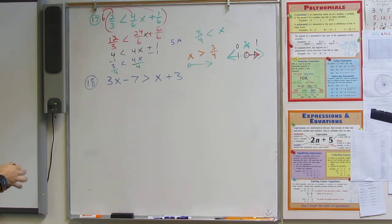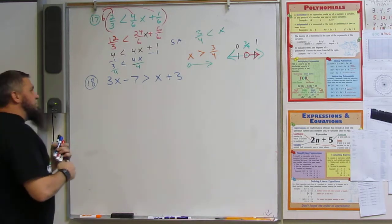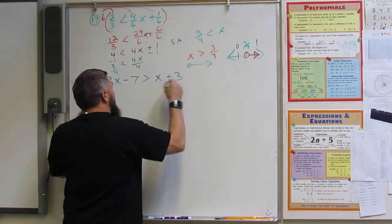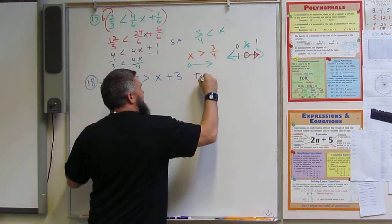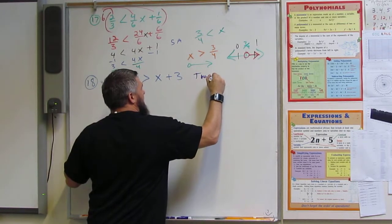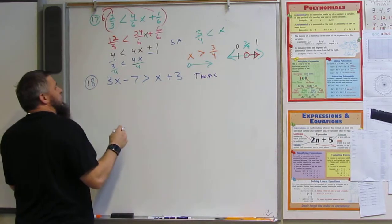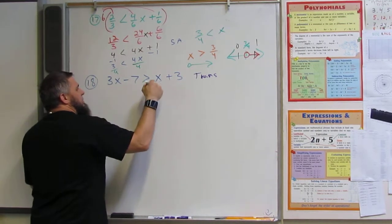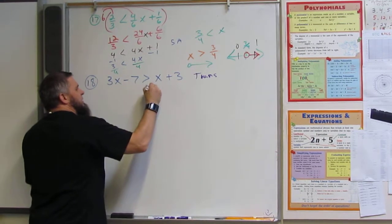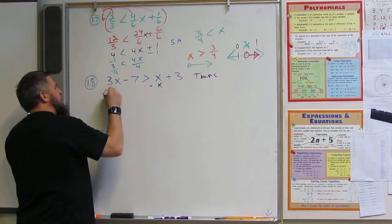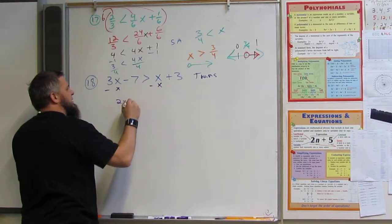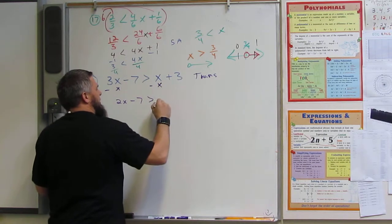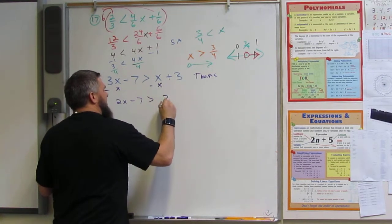So next, we're just... transition. So in this case, x on both sides, I've got to transition. Okay, so move the lowest one. 1 is lower than 3, so minus x, minus x, I get 2x minus 7 is greater than 3.